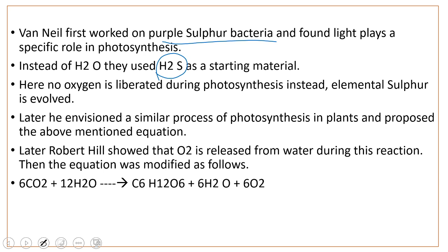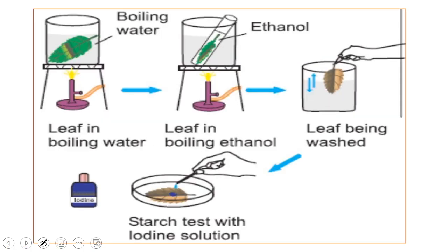After C.B. Van Neel, Robert Hill showed that oxygen is released from water during the process of photosynthesis. That's why Robert Hill changed the equation to: 6CO₂ + 12H₂O → C₆H₁₂O₆ + 6H₂O + 6O₂. This is the equation for photosynthesis that is widely accepted today.